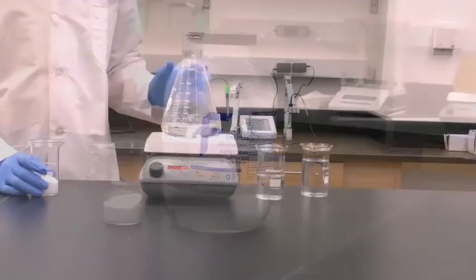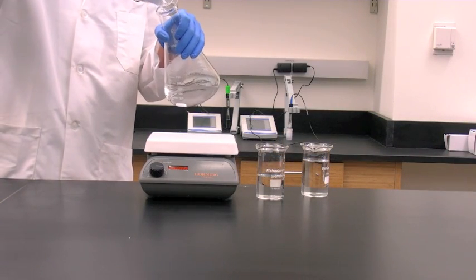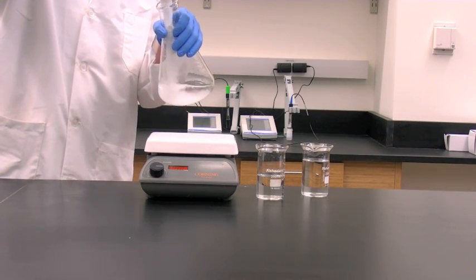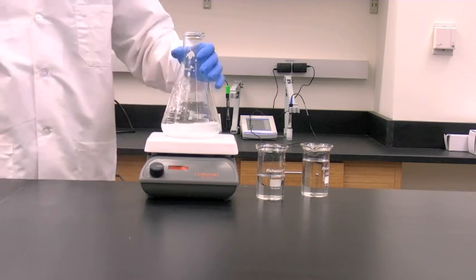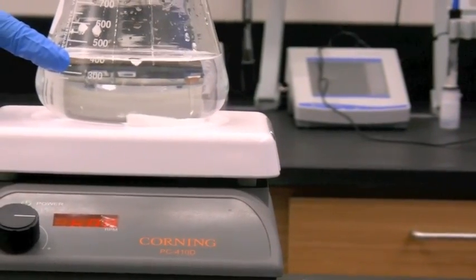Using another 1 liter flask, slowly add 50 grams glucose into 200 milliliters of distilled water while stirring. Heat the solution on the hot plate to dissolve completely.